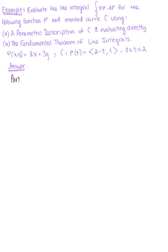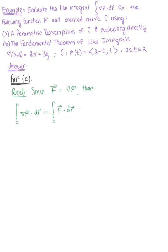Let's start with part a, using a parametric description. We recall that since we have a conservative vector field, we can write vector field f as the gradient of our potential function phi. So the line integral over c of the gradient of phi dot d vector r is equivalent to the line integral of vector field f dot d vector r. For computation, we convert by parametrizing f in terms of the curve, giving f of r(t) dotted with the tangent vector r prime of t dt.